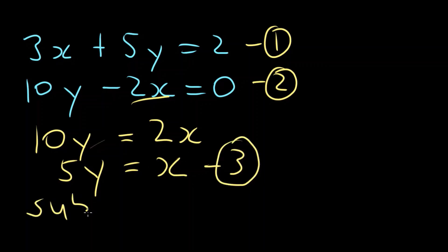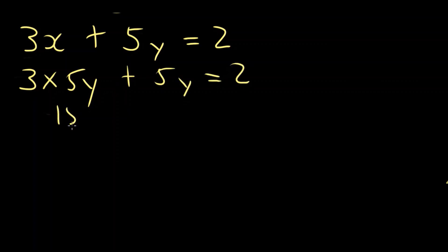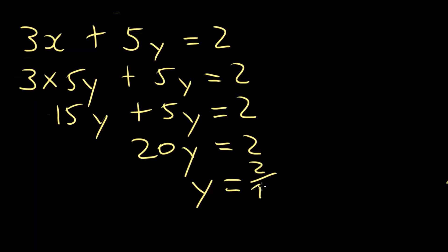So substitute equation 3 into 1. 3x plus 5y equals 2. Now we found in equation 3 that x equals 5y. So 3 times 5y plus 5y equals 2. 15y plus 5y equals 2. 20y equals 2. Y will equal 2 over 20, which equals 1 over 10 or 0.1. Great. Y equals 0.1.